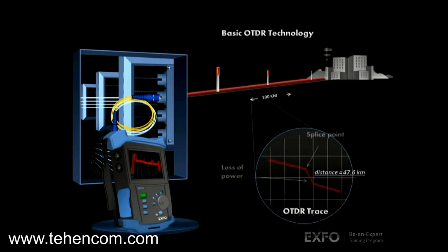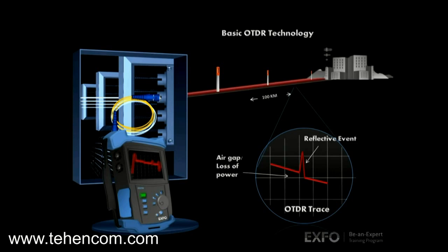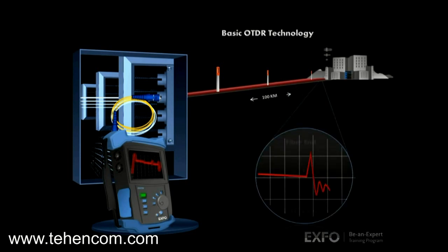The OTDR will accurately measure the distance to a splice and the loss of power at that particular splice. All reflective events are detected and measured for reflectance, power, and distance. Finally, the far end connection is detected and measured.